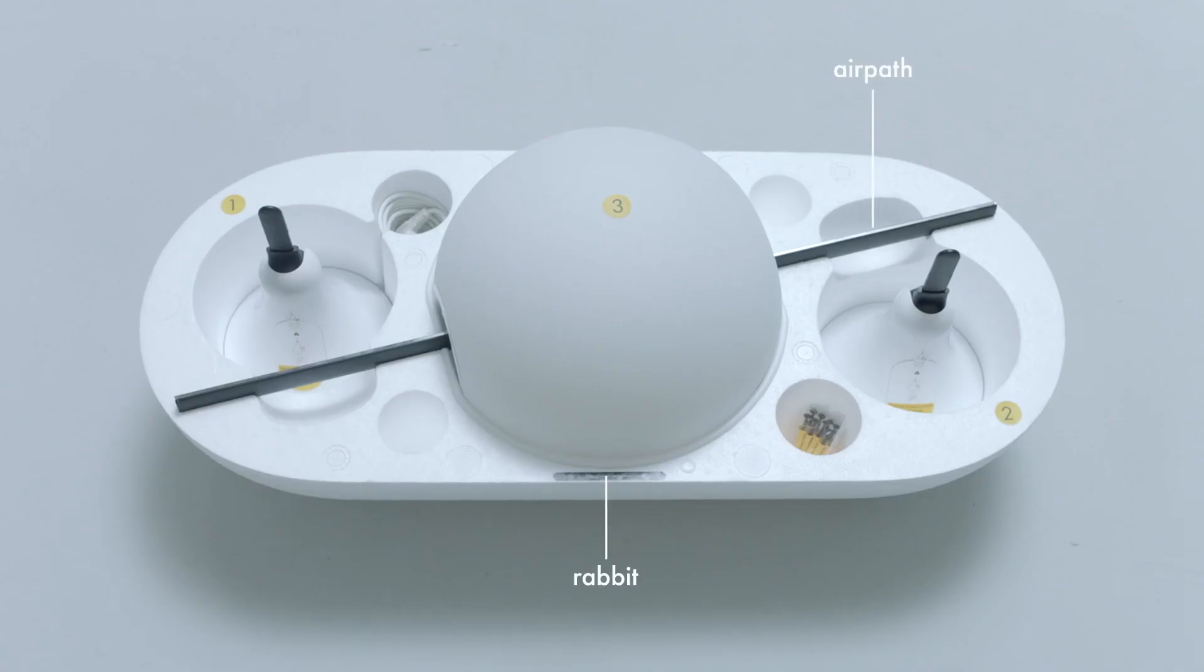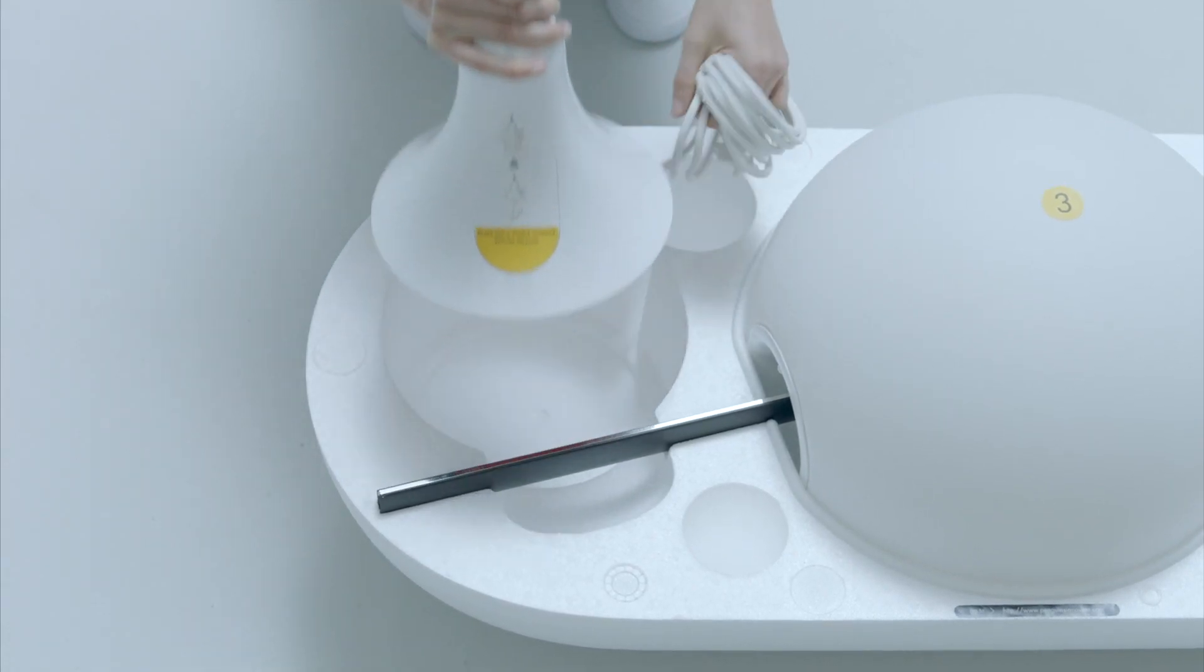Now open the package. You'll find one Rabbit, one air path, two feet, one power cord, and multiple screws.